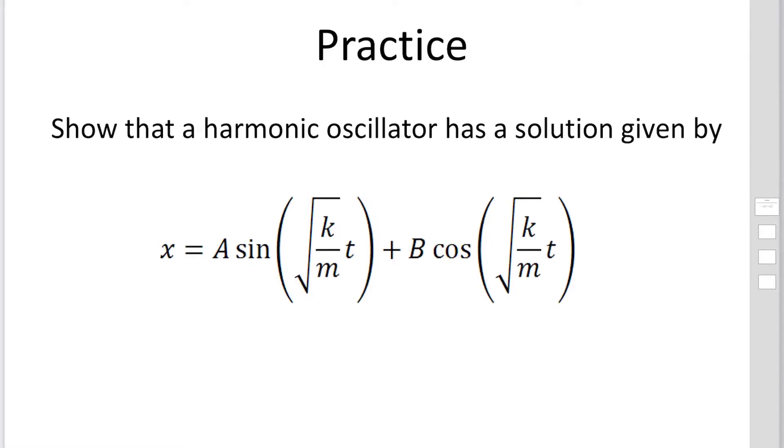In this practice, show that the harmonic oscillator has the solution given by x equals A sine square root k over m t plus B cosine square root k over m t.